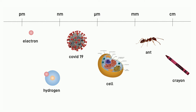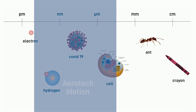The Automation One motion control platform thrives in the area of micron level, sub-micron level, and all the way down to nanometer and sub-nanometer levels of control. This is the level of precision we're talking about when we're talking about Aerotech motion control.